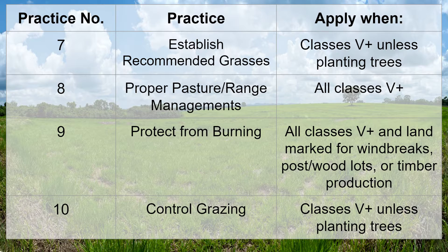Practice number eight: proper pasture and range management — always use this with class five and higher land. Practice number nine: protect from burning — always use with class five and higher land, and land that's marked for wind breaks, post or wood lots, or timber production. Practice number ten: control grazing — always use with classes five plus, unless you are planting trees.